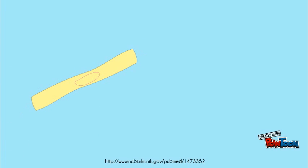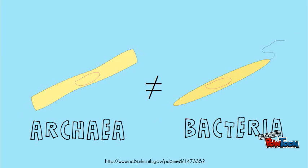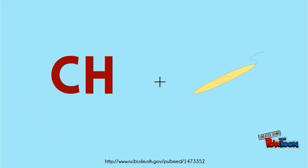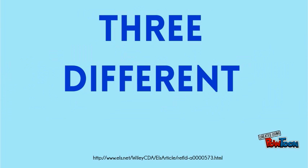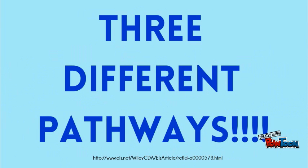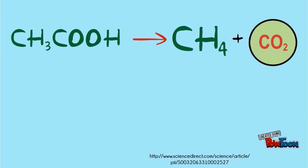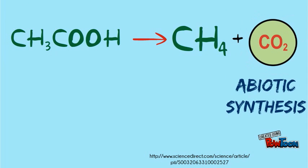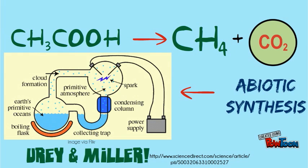Methanogenesis occurs in archaea, which differ from bacteria, and results in the production of methane and carbon dioxide. Typically, there are three pathways by which methanogenesis occurs. The first and most common pathway is through acetate fermentation. Acetate can be formed by abiotic synthesis, which was common during the time of primitive earth.